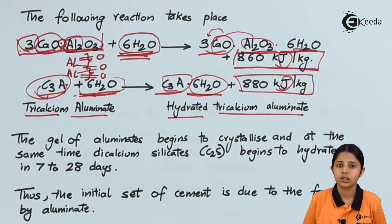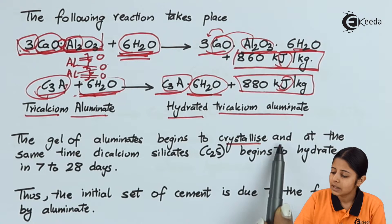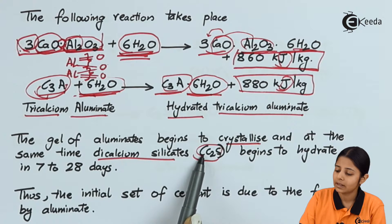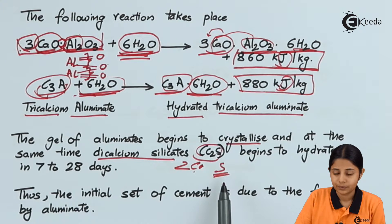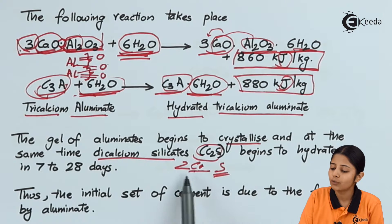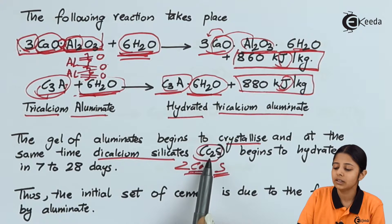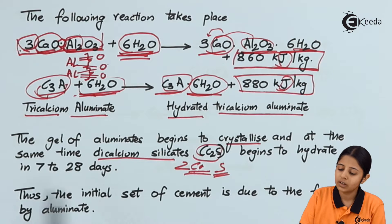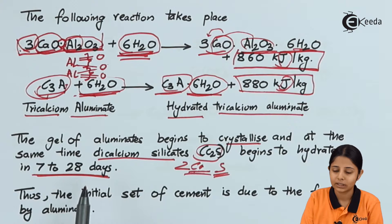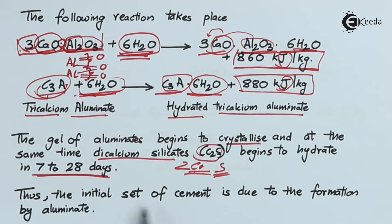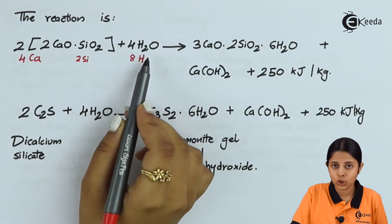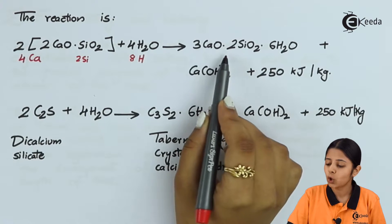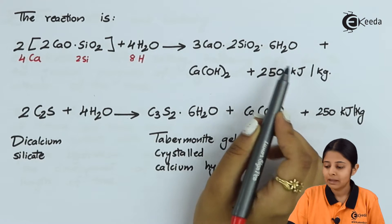The gel of aluminates begins to crystallize, and at the same time dicalcium silicate (C2S) — meaning two calciums and one silicate — begins to hydrate in seven to 28 days. Thus the initial set of cement is due to the formation of an aluminate. The reaction is: 2(2CaO·SiO₂) + 4H₂O → 3CaO·2SiO₂·6H₂O.